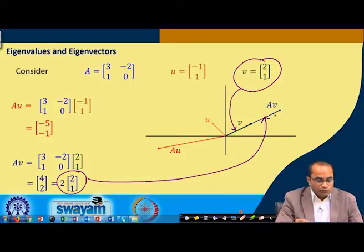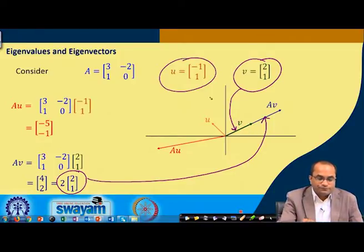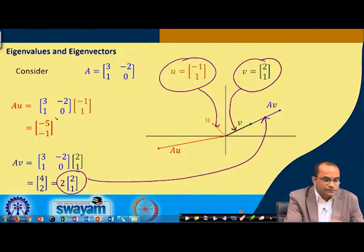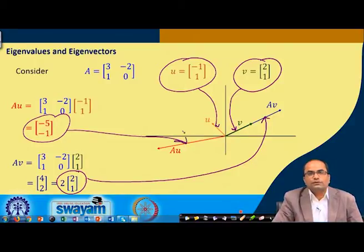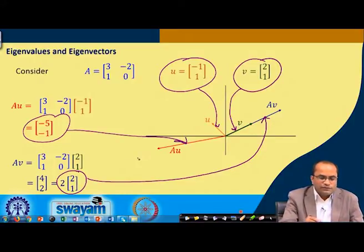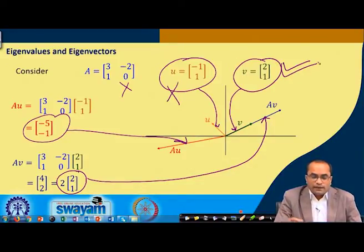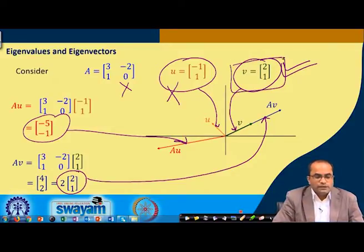We have vector Av. What is interesting is that Av and v have the same direction but different magnitudes. In the case of vector u, after multiplication Au becomes a completely different vector — the direction does not remain the same. Our interest is in vectors whose multiplication with the matrix does not change direction, meaning Av is parallel to v. These are called eigenvectors, and the number that comes out is called the eigenvalue.